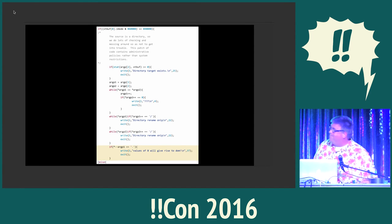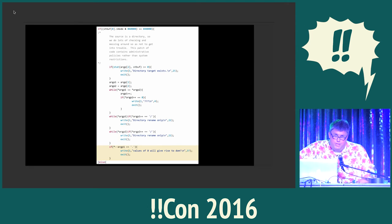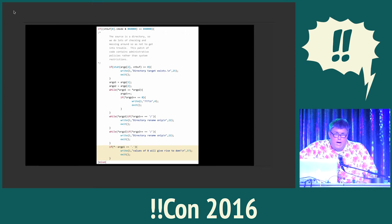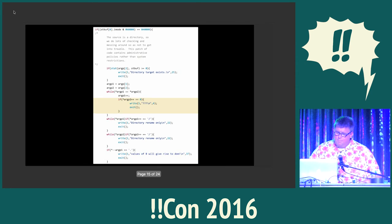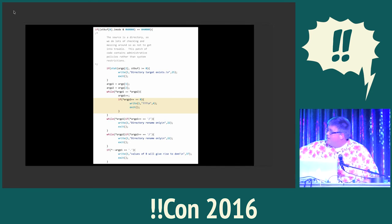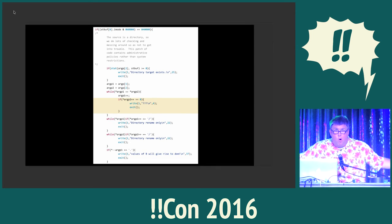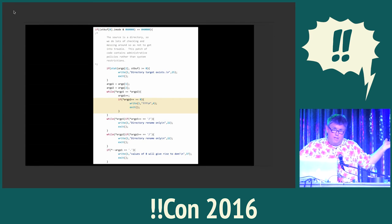So it went into version 6. It's actually in the move program. If you try to move a file that starts with dot-dot — remember, dot-dot is the parent of a directory — if you try to move dot-dot into some other name, it'll tell you "values of beta will give rise to DOM." My other favorite error message from this era: if you tell move to move a file onto itself, it'll just output some question marks and go "what?" They didn't have Unicode then, so they couldn't do the little gesture emoji.